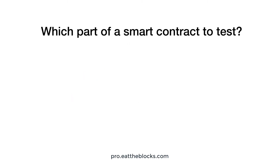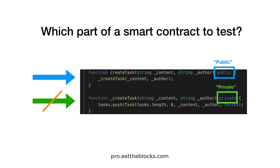Now that we have narrowed down which kind of tests we should do, the next question is what part of a smart contract should we test? Well, it's actually quite easy to answer. In a Solidity smart contract, you need to specify whether a function can be called from outside the smart contract or not, using the public and private keywords for example. Every function that can be called from outside the smart contract must be tested.